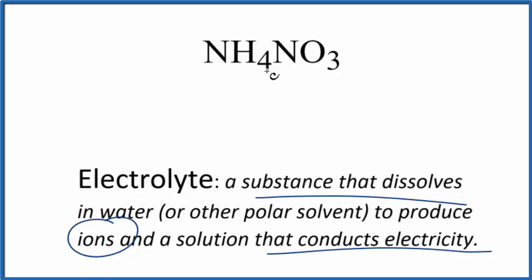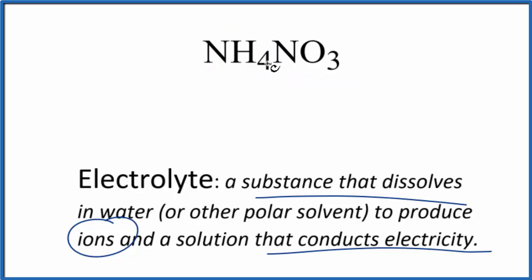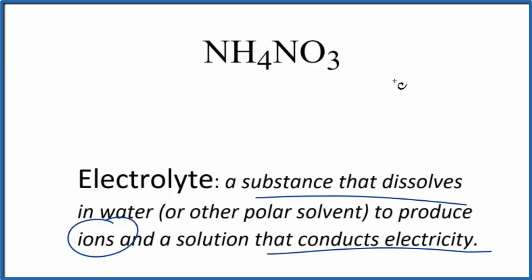For NH4NO3, you need to recognize that NH4 is the ammonium ion, and NO3 is the nitrate ion. We have these two ions together — this is an ionic compound. If you know your solubility rules, compounds with the ammonium ion are very soluble, and likewise, the nitrate ion is also very soluble. So when we put this ionic compound in water, it's going to dissolve into ions that have a charge.